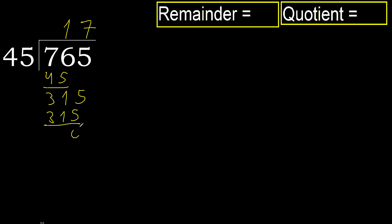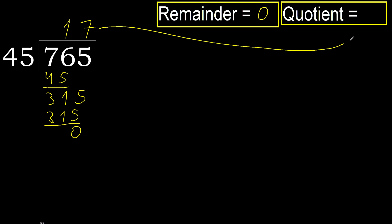Subtract. Next — there is no number remaining, therefore finish. 765 divided by 45 is 17.